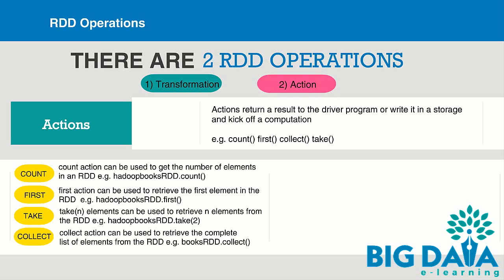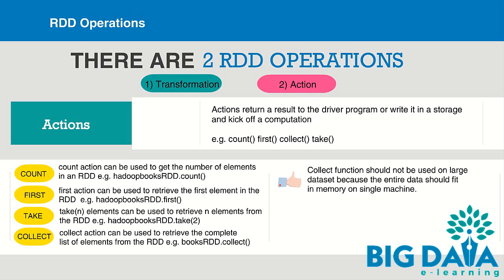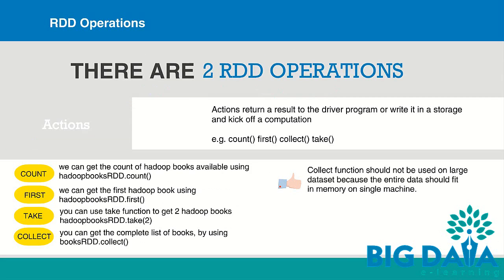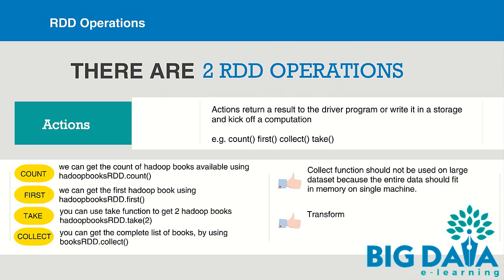Some points to note: collect should not be used on large datasets, because the entire dataset must fit in memory on a single machine. Collect can generally be used for unit testing and debugging purposes, so we need to make sure the RDD is narrowed down to a very small amount of data before using the collect action. Transformations always return an RDD, whereas actions return some other data type.